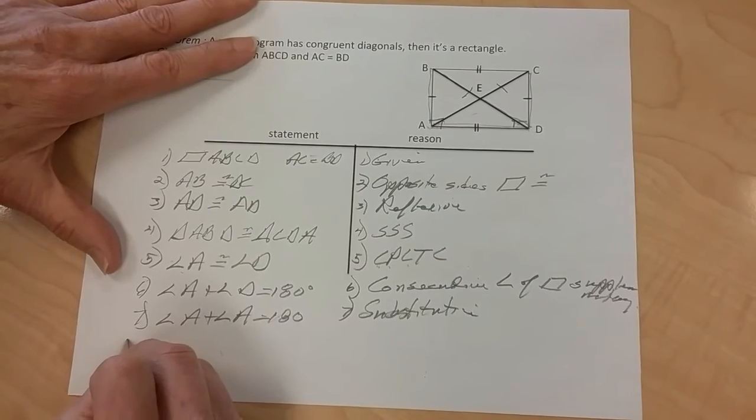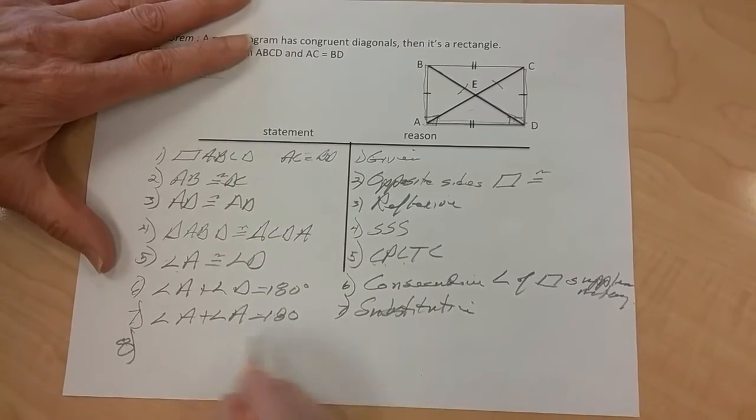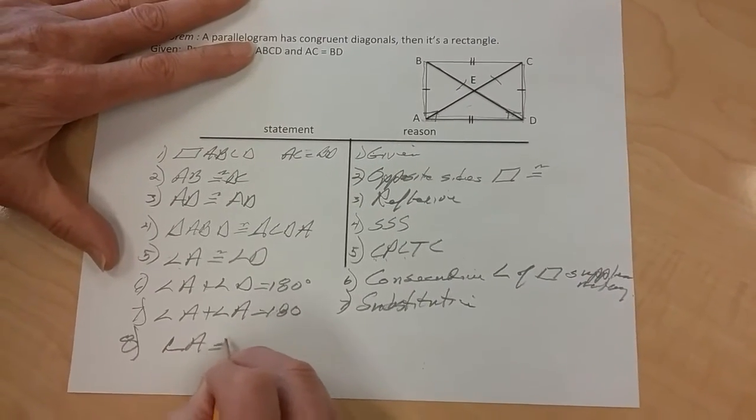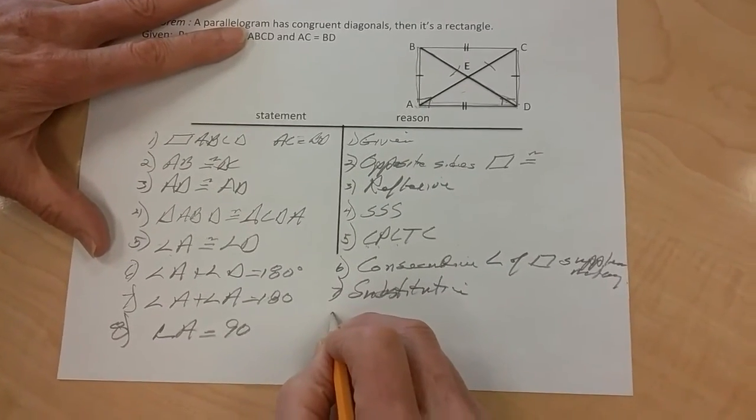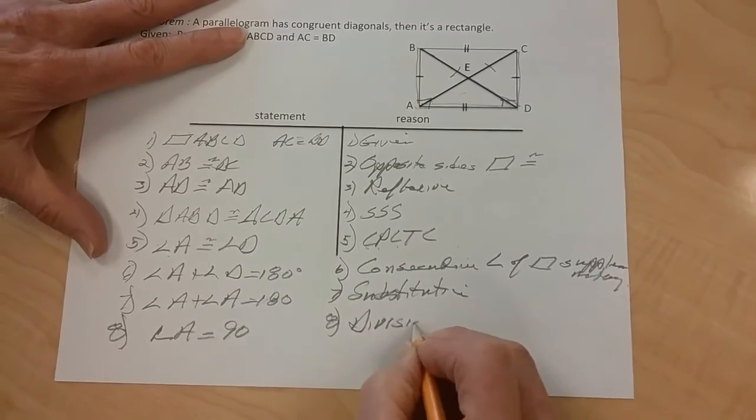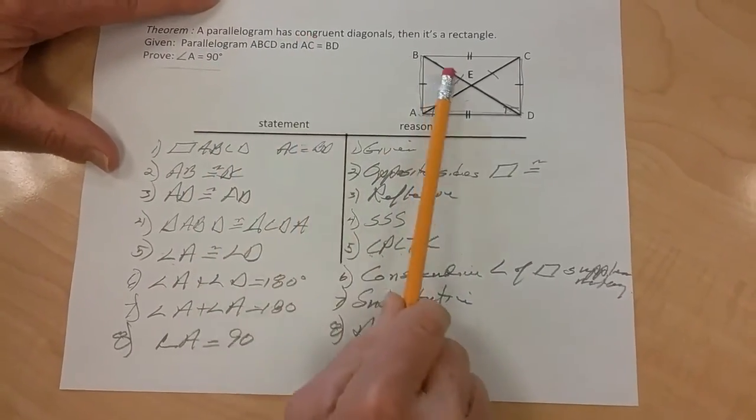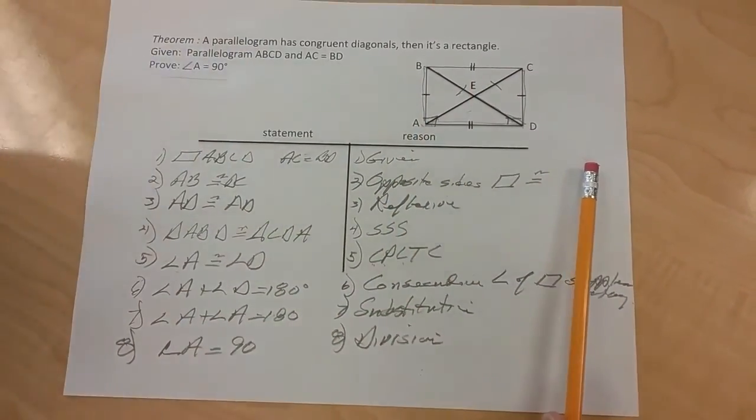And then 8, if I divide both sides by 2, if we combine that, that would end up with angle A is equal to 90 degrees, and we'll just call this right here 8, division. So we have proven now that a parallelogram, if it has congruent diagonals, then it is a rectangle.